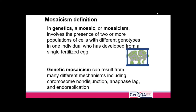We need to define mosaicism — it's the presence of two or more populations of cells in a single individual who has arisen from a single conception, and it can be the result of many different mechanisms: chromosome non-disjunction, anaphase lag, and endoreduplication.